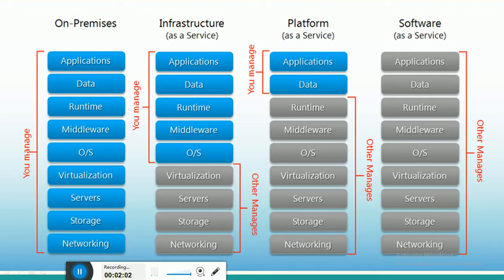Then came Infrastructure as a Service, which became very popular — like Google Cloud and Amazon Web Services. AWS is very popular because it provides infrastructure as a service. With IaaS, we still have to take care of applications, data, and the OS — for example, Linux for Apache and PHP, or Windows Server for IIS and ASP.NET. We also manage middleware and runtime like JRE or JDK, but the storage, networking, and memory problems are managed by AWS.